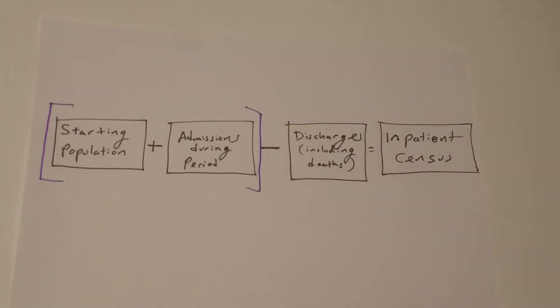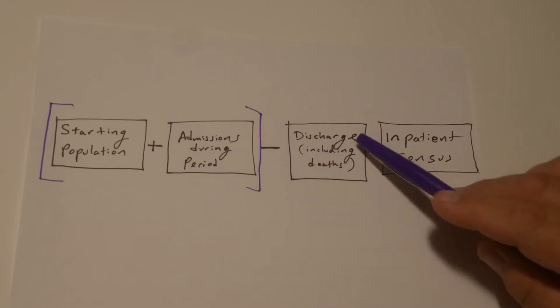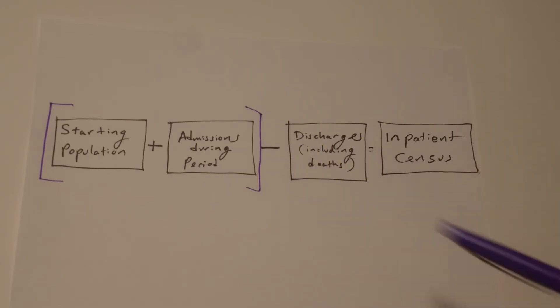So, we may want to block this off and do this first. So, I can put it in parentheses, like that. We always want to deal with what's in the parentheses first. Once we've taken the starting population and added the admissions during the period, then we're going to subtract from that any discharges during the period, including any deaths.